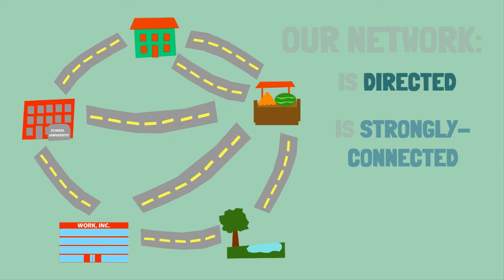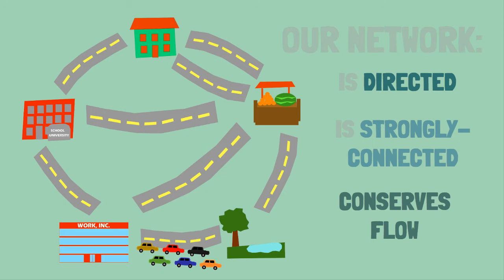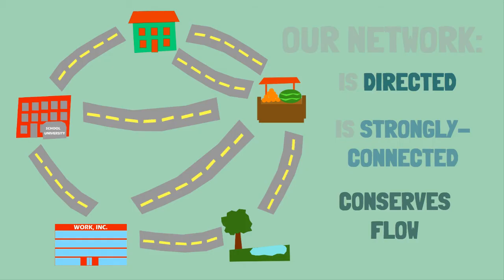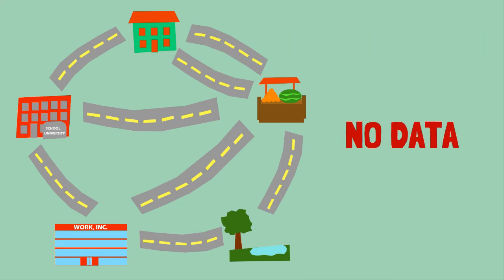We're also going to assume that there will be conservation of flow. So if six cars go to the park, these six cars have to leave the park eventually. Cars can't just appear out of nowhere or disappear into the park. Apart from that, although this isn't necessary for all ideal flow networks, because we have no data and we only know the structure of the road networks, we're going to assume that we have uniform distribution.